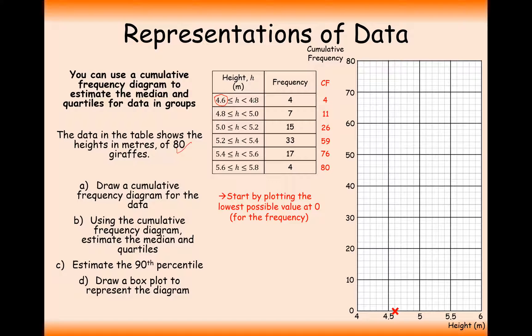The next thing we need to do is plot using the ends of these intervals our cumulative frequency values. The reason for this is that there are four giraffes that have a height less than 4.8. How many giraffes have a height less than 5? Well, 11 giraffes have a height less than 5 based on these 7 and these 4. How many giraffes have a height less than 5.2? 26 giraffes have a height less than 5.2 based on this 15, 7 and 4. So it's how many giraffes have a height less than all of these key values on the right hand side of this interval here. So plot these as we go through.